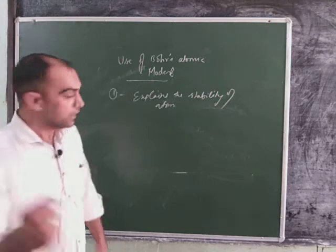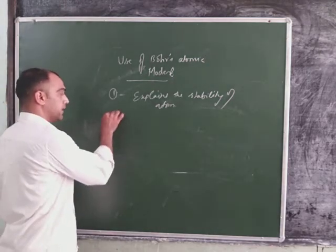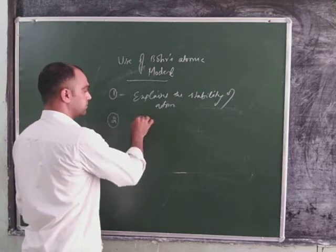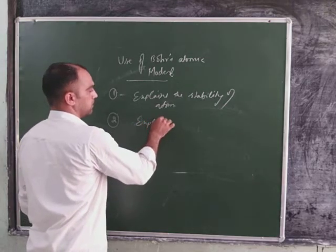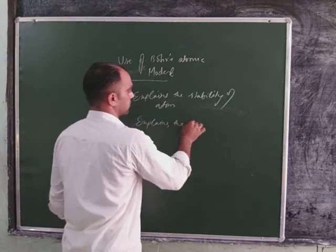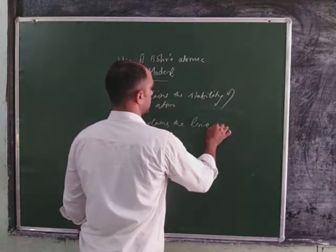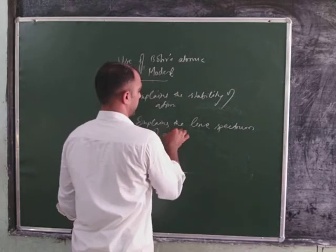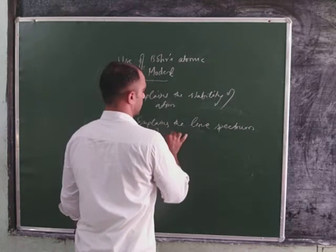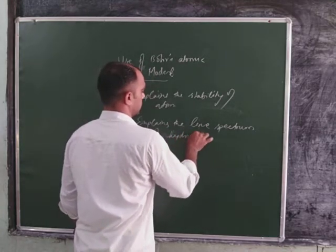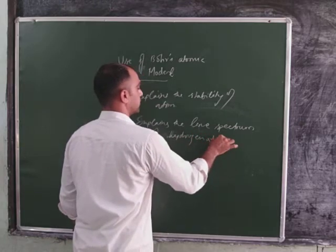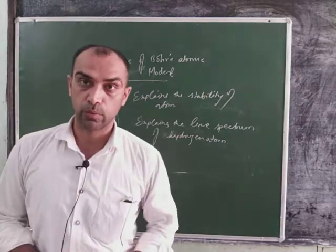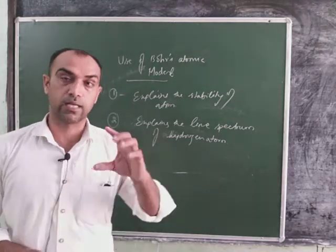The second thing that is explained here by Bohr's atomic model, it explains the line spectrum, the line spectrum of hydrogen atom. That is the biggest thing. You will remember, emission spectrum you studied, absorption spectrum.